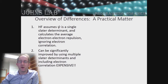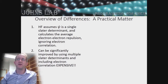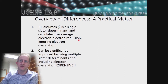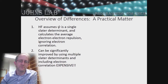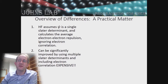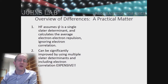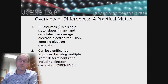Just a reminder: the Hartree-Fock approximation assumes that our wave function psi is a single Slater determinant and it calculates the average electron-electron repulsion energy ignoring electron correlation. The energies we get out can be significantly improved by using multiple Slater determinants and including electron-electron correlation, done either perturbatively or through something like coupled cluster or CCSD — but this is very expensive, meaning it takes a lot of computer time.